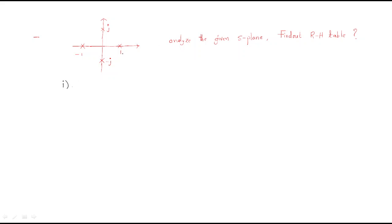In the RH plane, how many poles are available? First, on the right-hand side of the plane we have only one pole. So we should have one sign change in the RH table. Second, ROZ is not repeated because on the imaginary axis we have only two poles, so ROZ equals one.